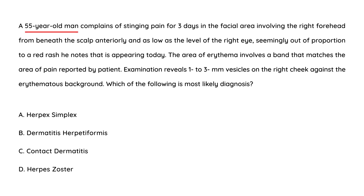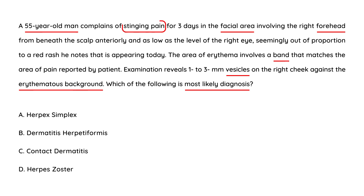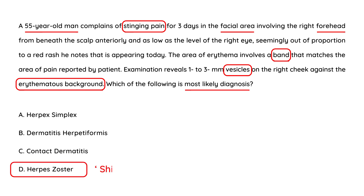Clinical vignette one: A 55-year-old man complains of stinging pain for three days in the facial area involving the right forehead, from beneath the scalp anteriorly and as low as the level of the right eye, seemingly out of proportion to a red rash appearing today. The area of erythema involves a band matching the area of pain. Exam reveals 1-3 mm vesicles on the right cheek against an erythematous background. The pain is stinging, it's characterized as a band, and there are vesicles on a red base — all characteristic of herpes zoster, also known as shingles.